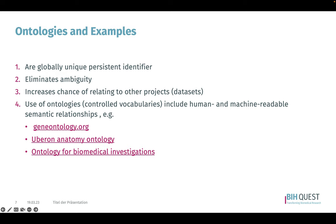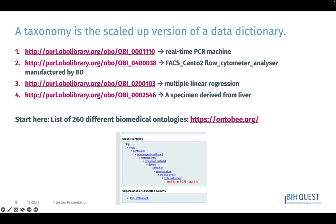Some of the relevant ontologies in our research contexts include geneontology.org, the Uberon anatomy ontology, and the Ontology for Biomedical Investigations. A good starting point to look up ontologies in our field is ontology.b (OBO Foundry).